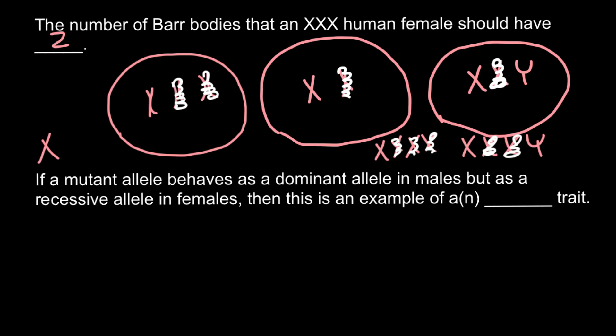So as you see, the correct answer would be two — a triple X female would have two Barr bodies in her nucleus. Next question: if a mutant allele behaves as a dominant allele in males but as a recessive allele in females, then this is an example of what kind of trait? Here is my explanation if you don't know how to answer this question.